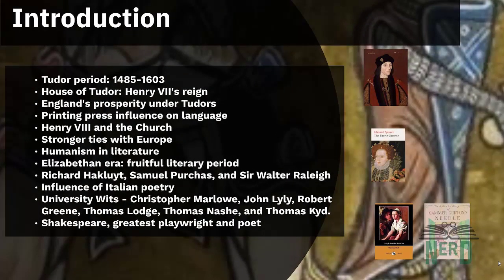The Tudor period in England and Wales lasted from 1485 to 1603, with the reign of Elizabeth I until 1603, known as the Elizabethan period. The House of Tudor, with its first monarch Henry VII, ruled during this time.